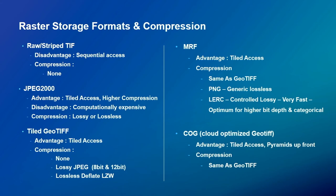The MRF — Meta Raster Format — was actually developed by NASA JPL, so it's not an Esri format. It is internally tiled so you can access randomly as necessary, and it supports multiple compression formats. LERC — in the middle right — is something Esri developed but released into the public domain. It's an Esri compression type understood by ArcGIS, but it's open and not proprietary.